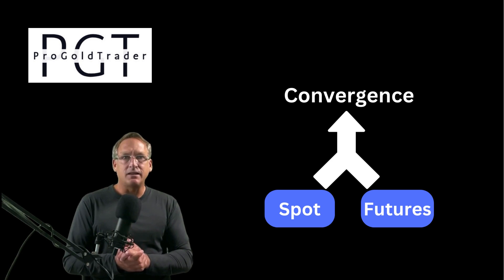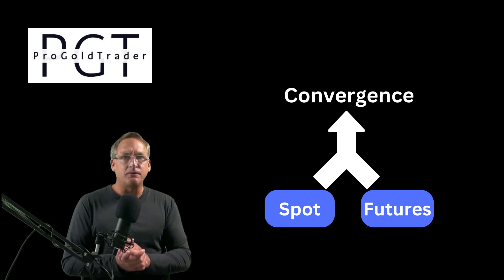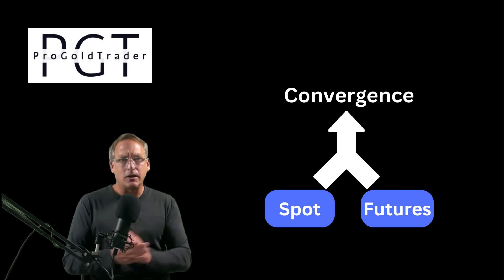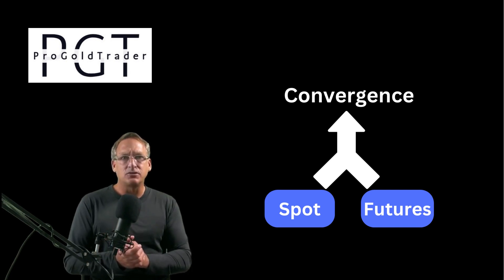Arbitrageurs will continue to buy and sell futures contracts until the spot and futures prices converge. Spot and futures price convergence is an important concept — it helps ensure the futures market is fair and efficient, and helps reduce risk for investors who trade in the futures markets.